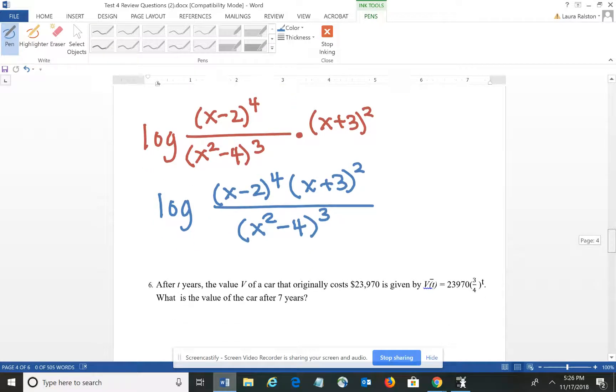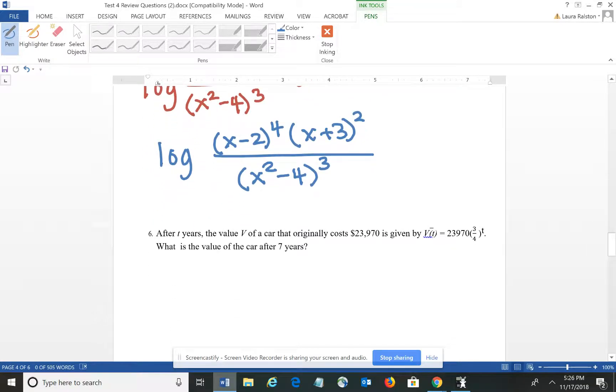All right, let's see if we can do one more. This one is a formula – after t years the value of a car originally cost $23,970 is given by the equation. They actually give you the formula that you need in the problem. So this is kind of the formula that you're going to use to plug and chug into and it wants to know the value of the car after 7 years. So basically the 7 years is your t.